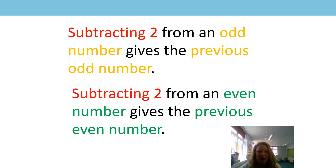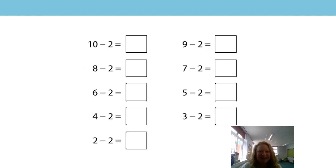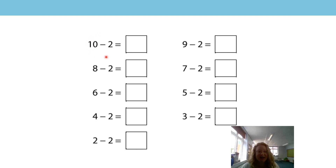So we've got some problems with missing numbers — we need to make our equations whole. We're going to start with the first one together, do a few together, and then you're going to have a go on your own. What do you spot straight away about our first equation? It begins with a 10 — is 10 even or odd? Good, it's even. So we have an even number subtract two, which is going to give us the previous even number.